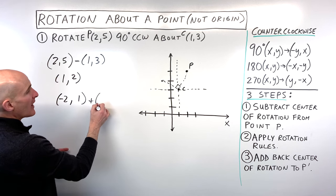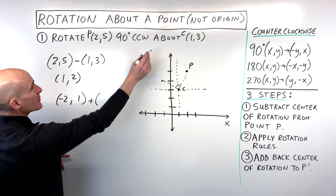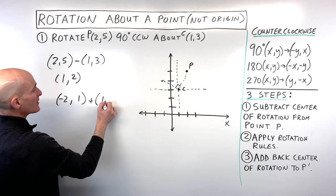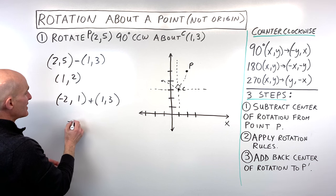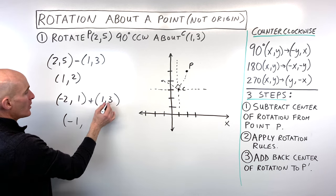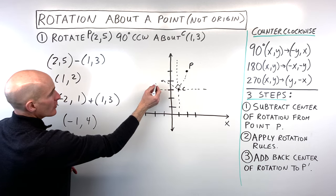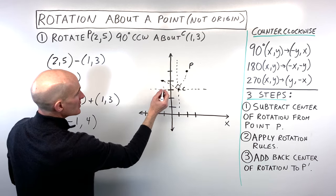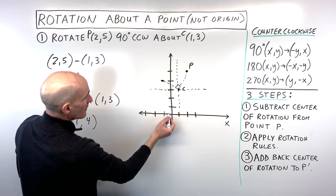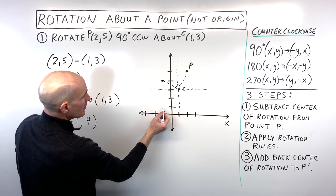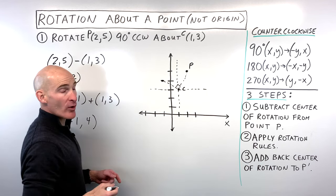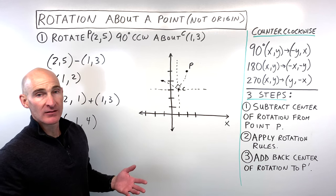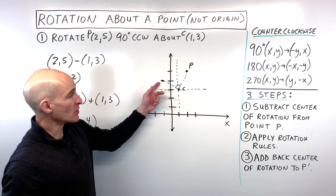Our center of rotation is (1, 3). So -2 plus 1 is -1, and 1 plus 3 is 4. Look at where this point is — left 1, up 4 — and that's exactly where the rotated point is located.